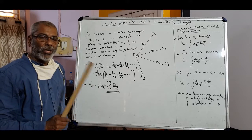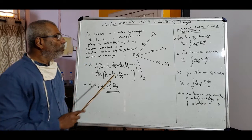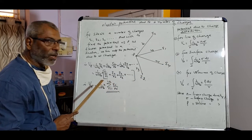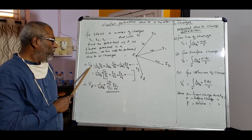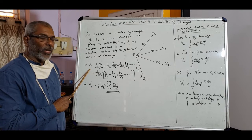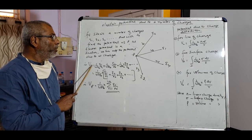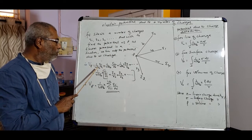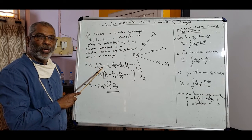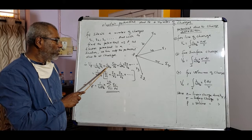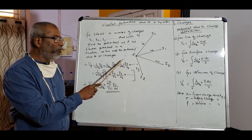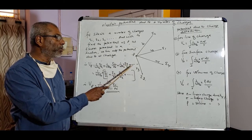As electric potential is a scalar quantity, potential due to individual charges are added up in this case. Hence we can write Vp is equal to, that means potential due to all these charges at point p, Vp is equal to 1 by 4 pi epsilon 0 q1 by r1 plus 1 by 4 pi epsilon 0 q2 by r2 plus 1 by 4 pi epsilon 0 q3 by r3, etc.